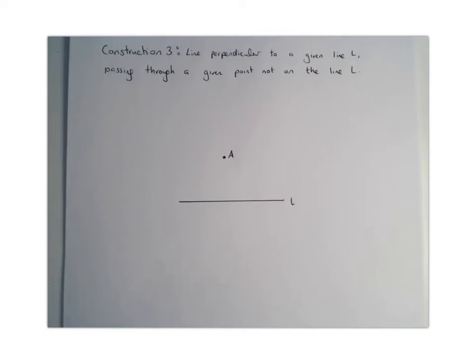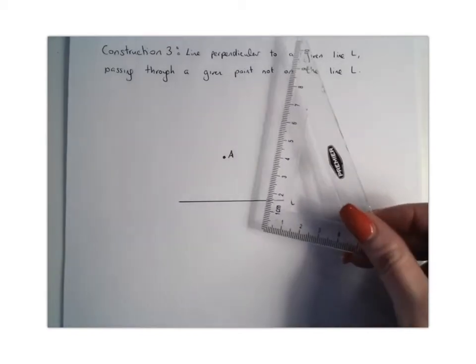There's two methods for this, so the easier method that you can use is you can actually go and use your set square. So our set square looks like this,